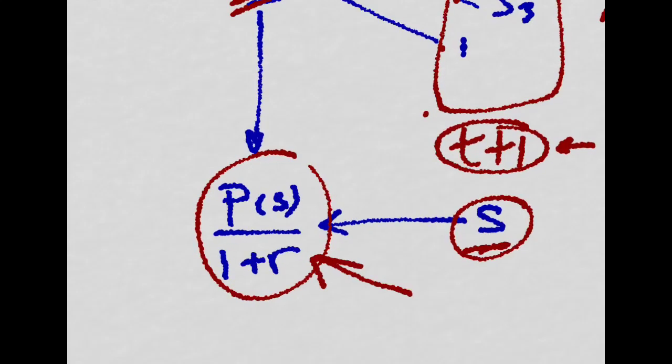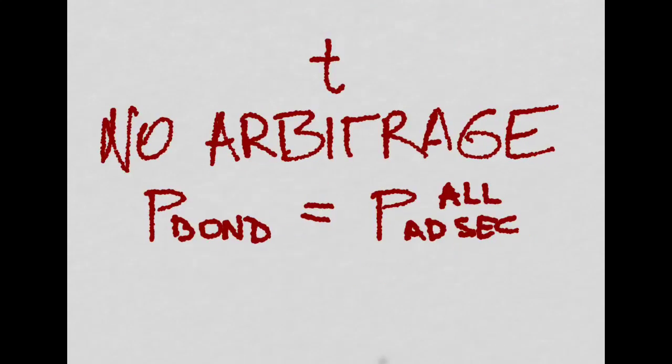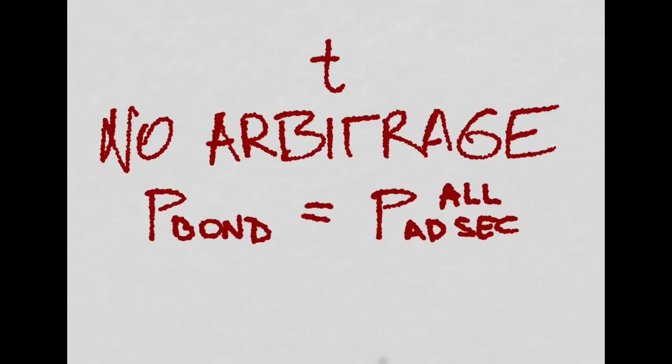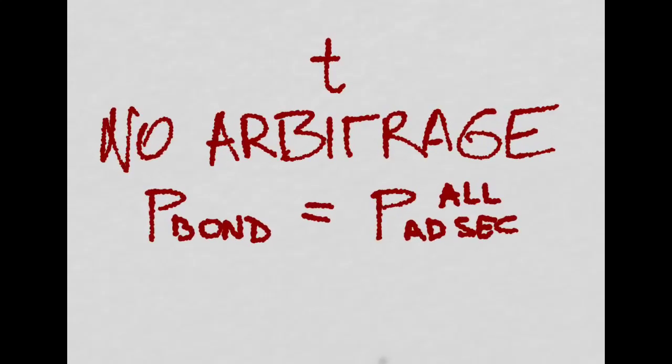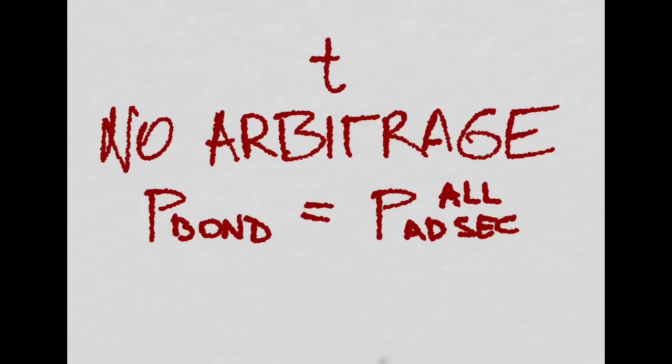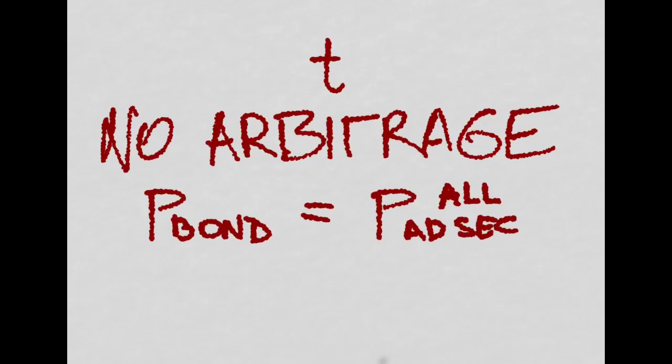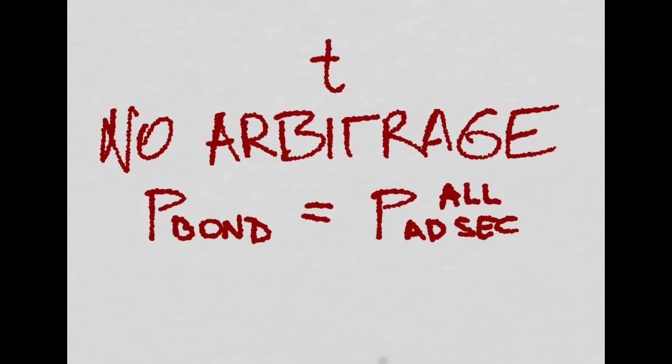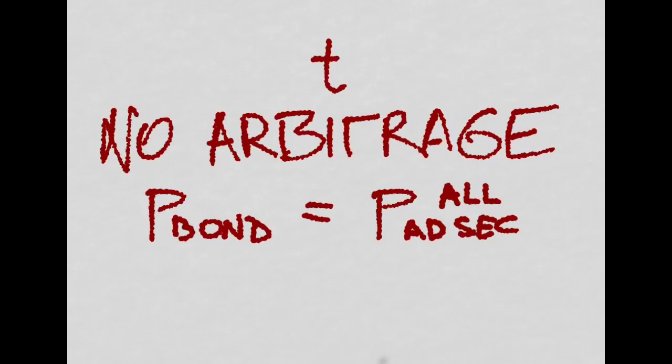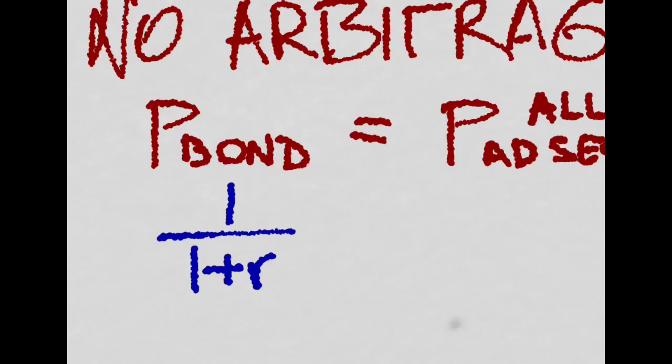So at equilibrium at any point in time, there has to be no arbitrage possibilities, meaning the price of the bond has to be equal to the price of all of the Arrow-Debreu securities that you bought to insure yourself against the future, against any possible state of the world. Recall that the price of the bond is just 1 over 1 plus R.